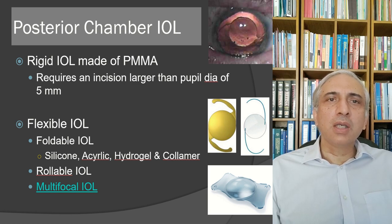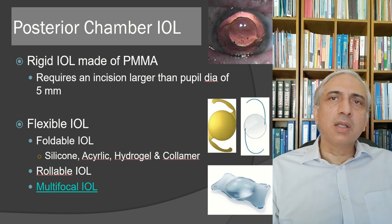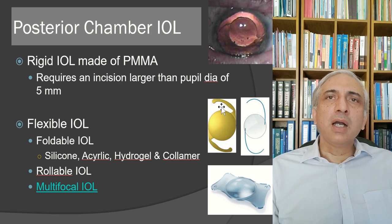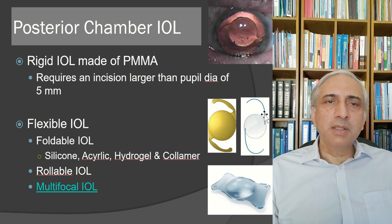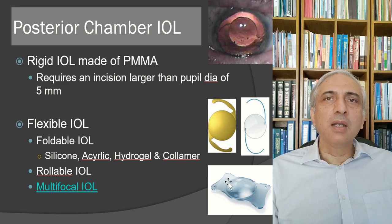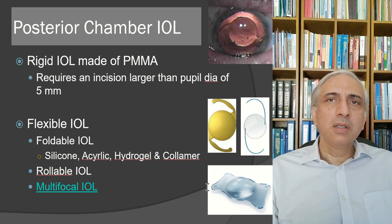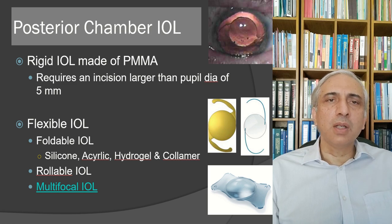A multifocal IOL shows rings on the lens surface. Single-piece IOLs have the optic and haptics as one unit; multi-piece IOLs have prolene haptics. Plate haptic IOLs have plate-shaped haptics that reside in the capsular bag. On slit lamp, the circular striations visible on the lens surface confirm a multifocal IOL.